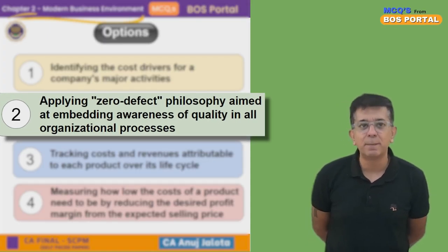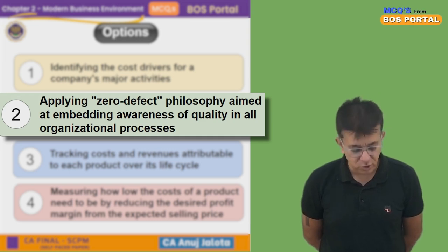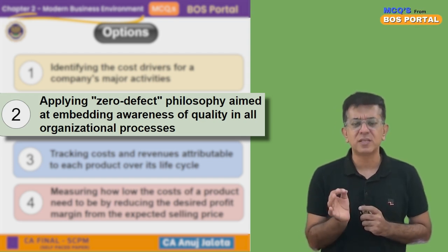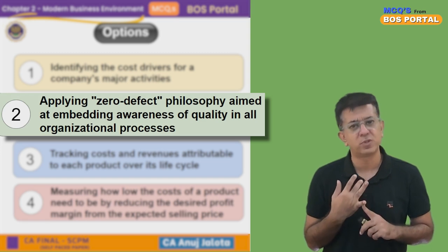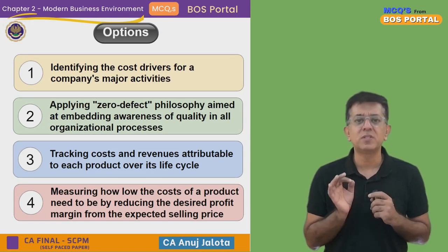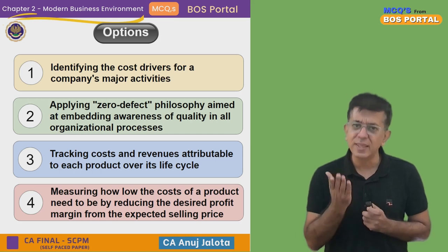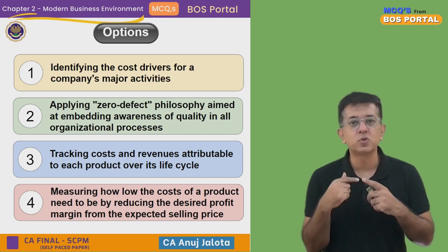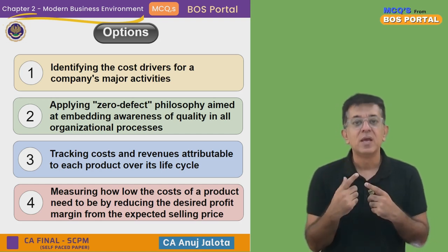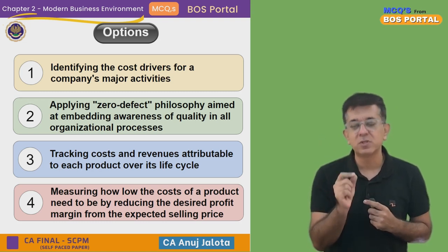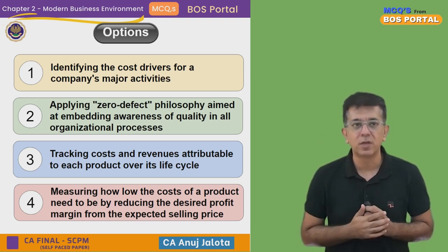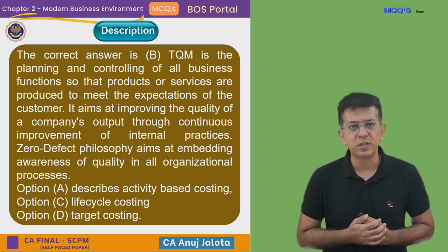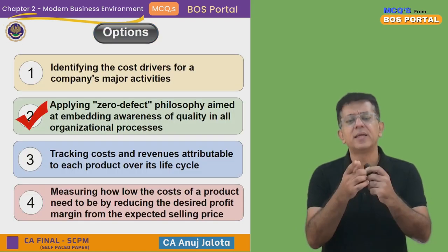Option two — applying zero defect philosophy aimed at embedding awareness of quality in all organizational processes — is TQM, Total Quality Management. It aims at having zero defects and quality in everything: your product, your processes, everything. Do remember, quality is not a one-time thing; it is a process that has to be done every day. Your staff should be trained to produce quality products. So the answer is option two — that is the correct answer, as per the institute's explanation.